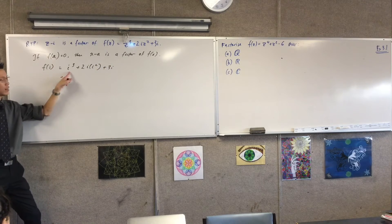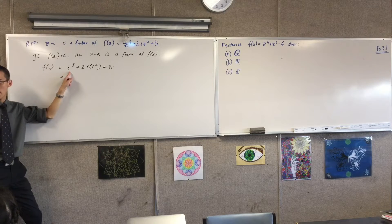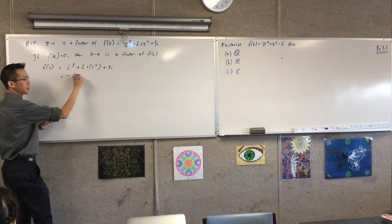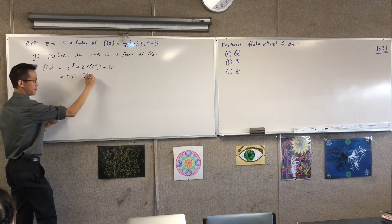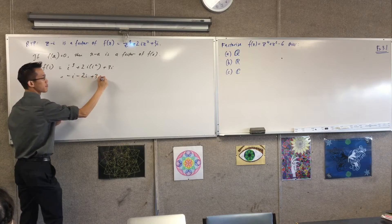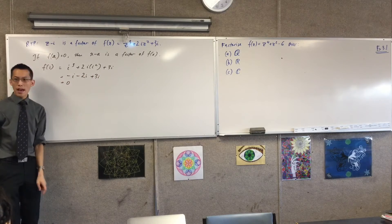i cubed, 2i, i squared, plus 3i. Well, you can take out two of the i's to be negative 1, so this is negative 1. This is minus 2i, 2 of them, and this is 3i. This is 0, right?